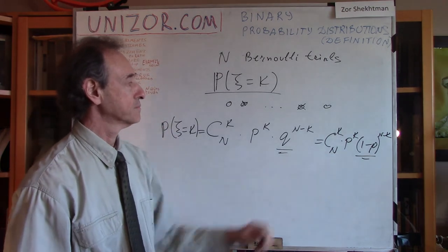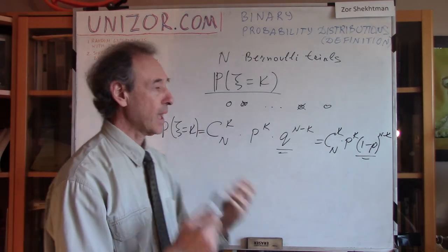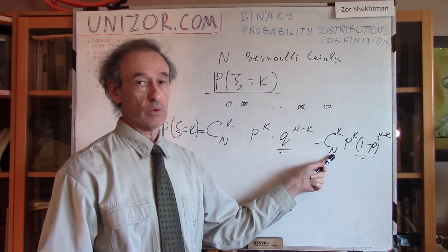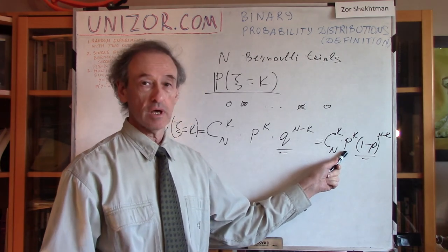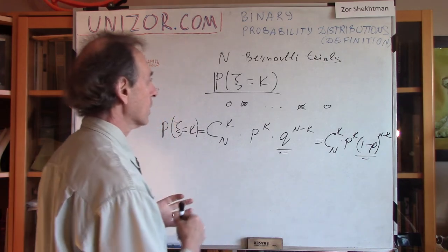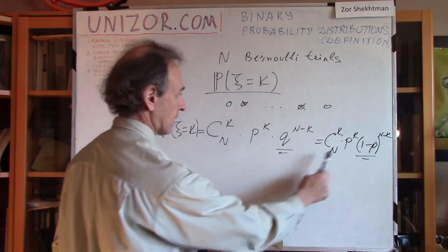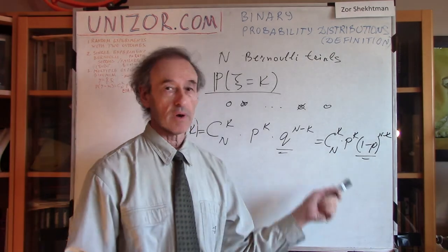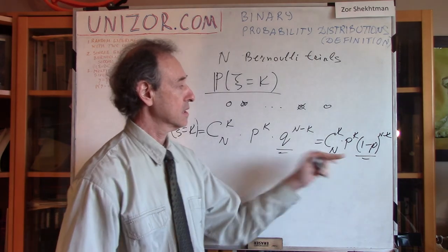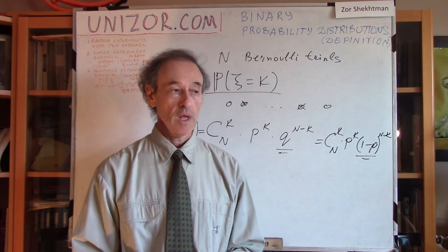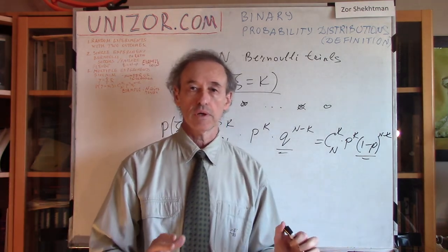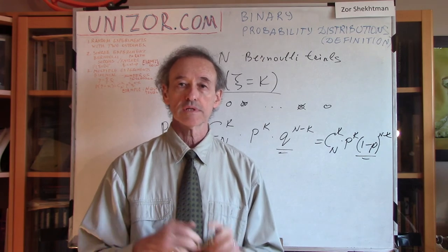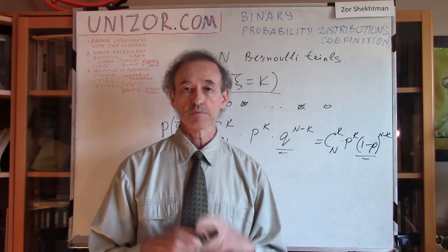This formula depends on two parameters. First, N — how many trials participate. Second, P — the probability of success in one particular trial. When we talk about binomial distribution, we mean a distribution that depends on the number of trials N and the probability of success P in each individual trial. I just wanted to define these two different probabilistic distributions: Bernoulli for a single experiment with two results, and binomial distribution, which is basically the combination of N such trials.